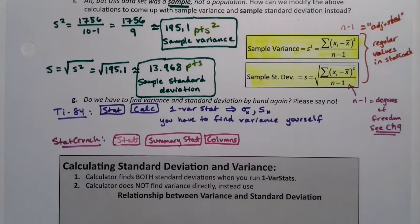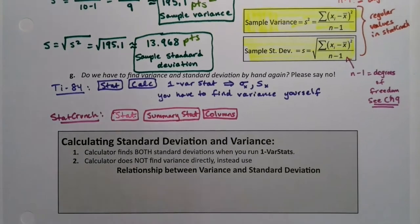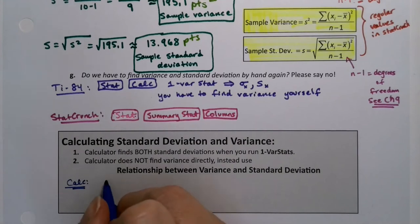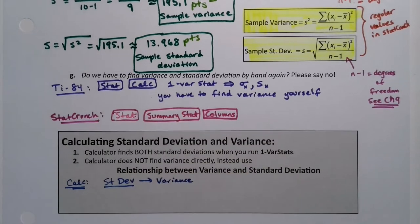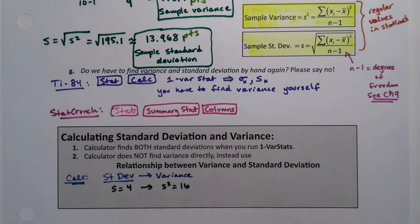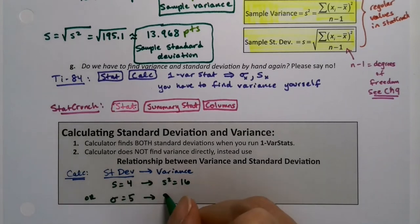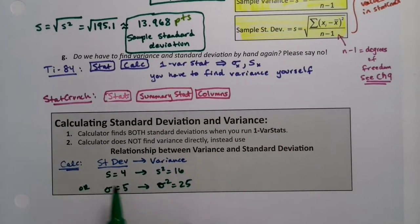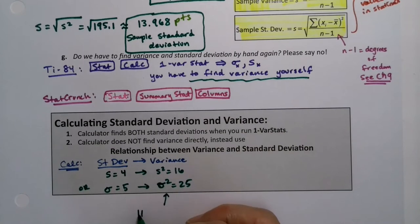All right, now one last thing here. How do we find variance and standard deviation from each other? It says that sigma squared is equal to variance, or S squared. So on the calculator, if they give you standard deviation — which is what the calculator does — then you square it to find the variance. So if S is equal to four, then variance is S squared, which is 16. Or if sigma is five, then sigma squared is 25. That's how you work it on a calculator. It'll give you sigma and S, and that's what I mean when I say you find it yourself. That is how to find variance with the calculator.